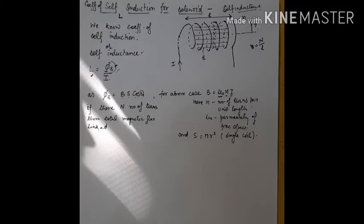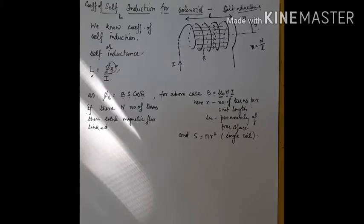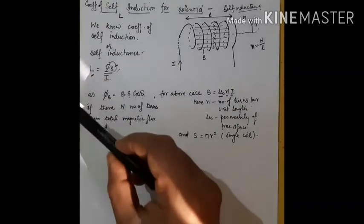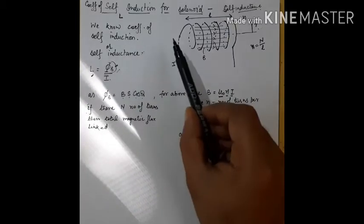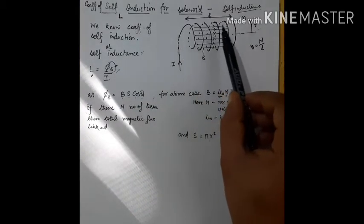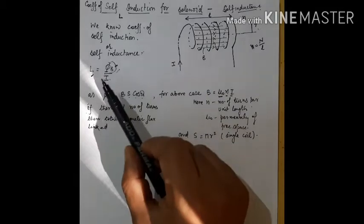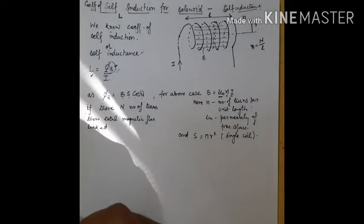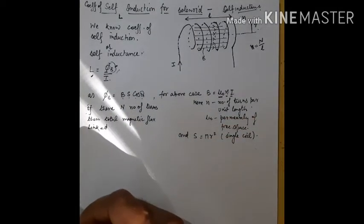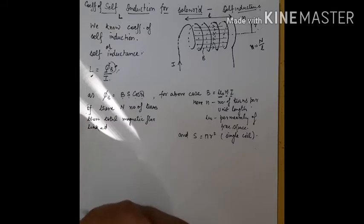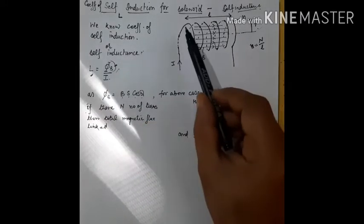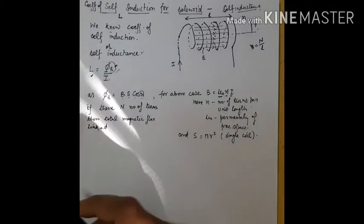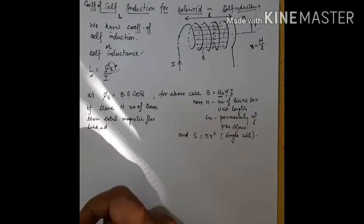To calculate the coefficient of self-induction or self-inductance, we go to the definition which says that the coefficient of self-induction is equal to the total magnetic flux linked with all the coils divided by the current passing through the solenoid. If we can calculate the total flux linked with all the coils, we can find the value of L.